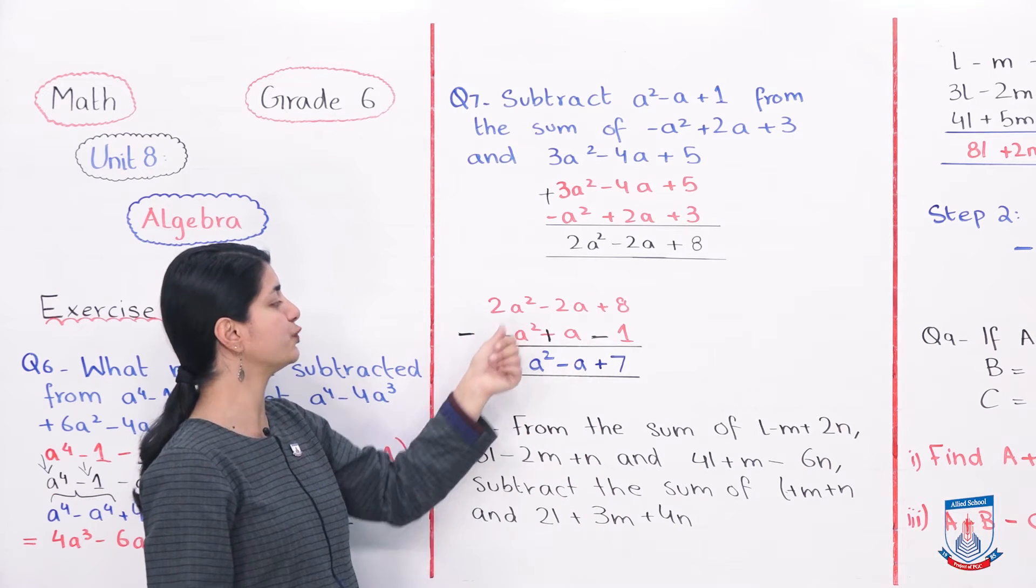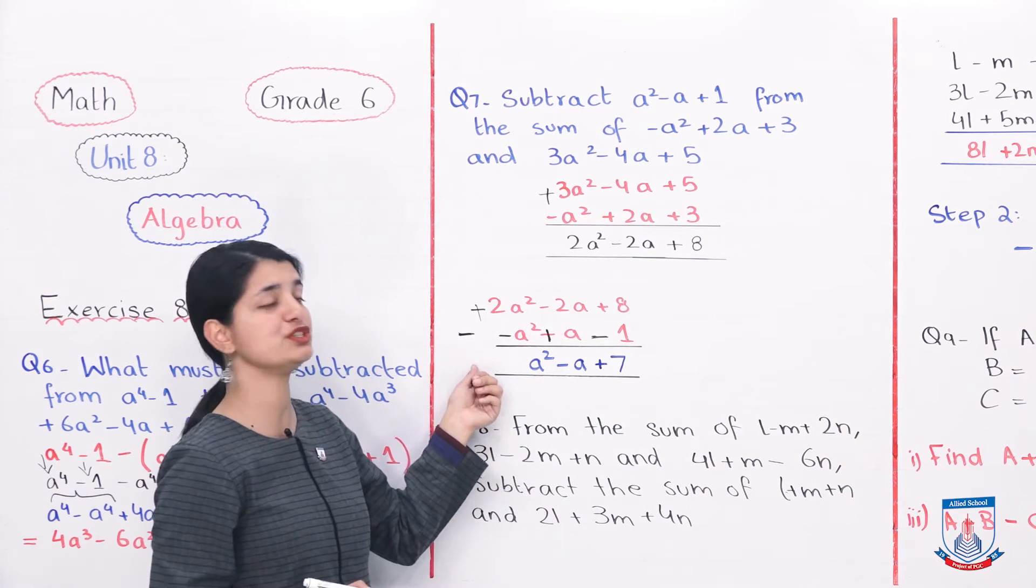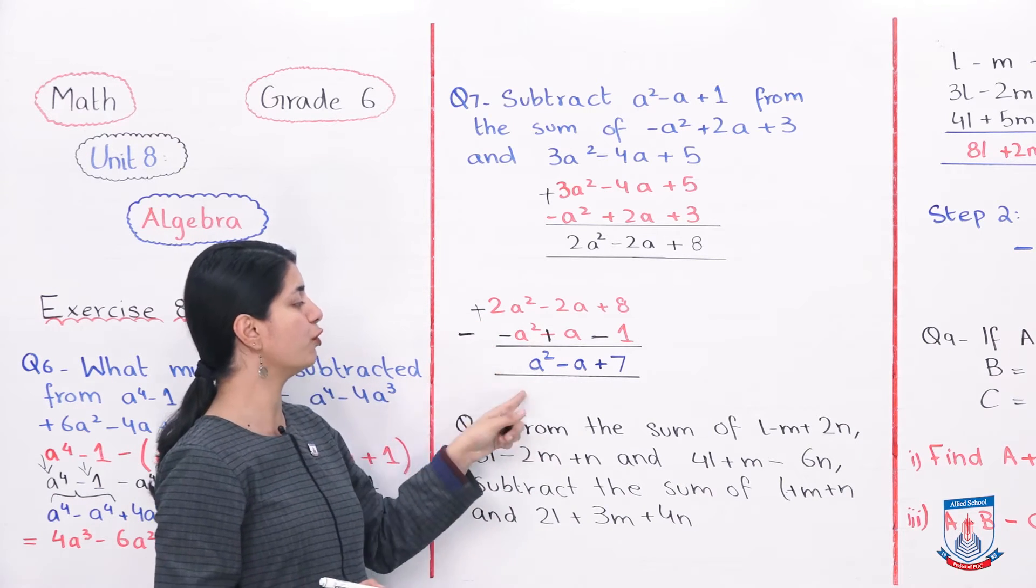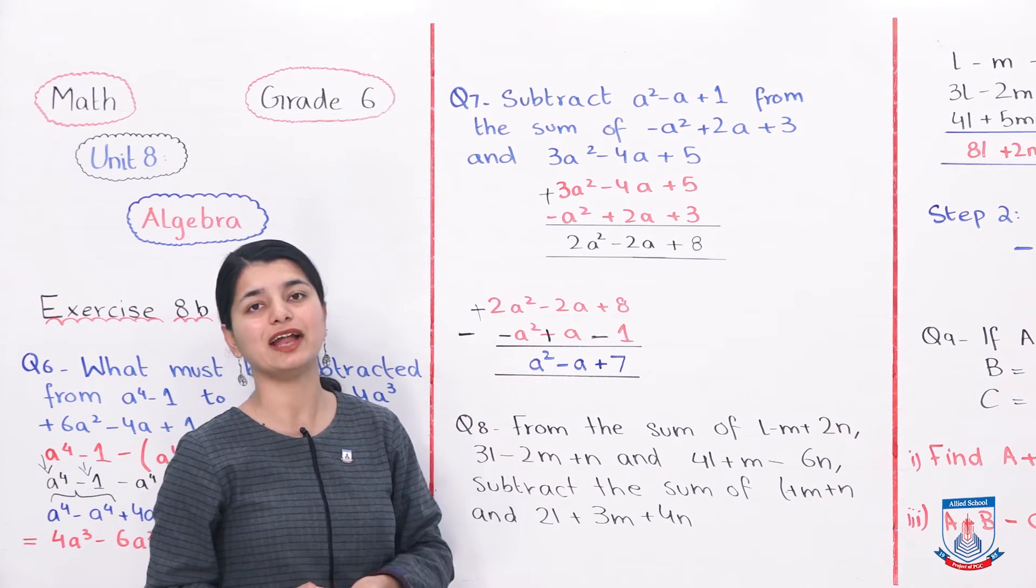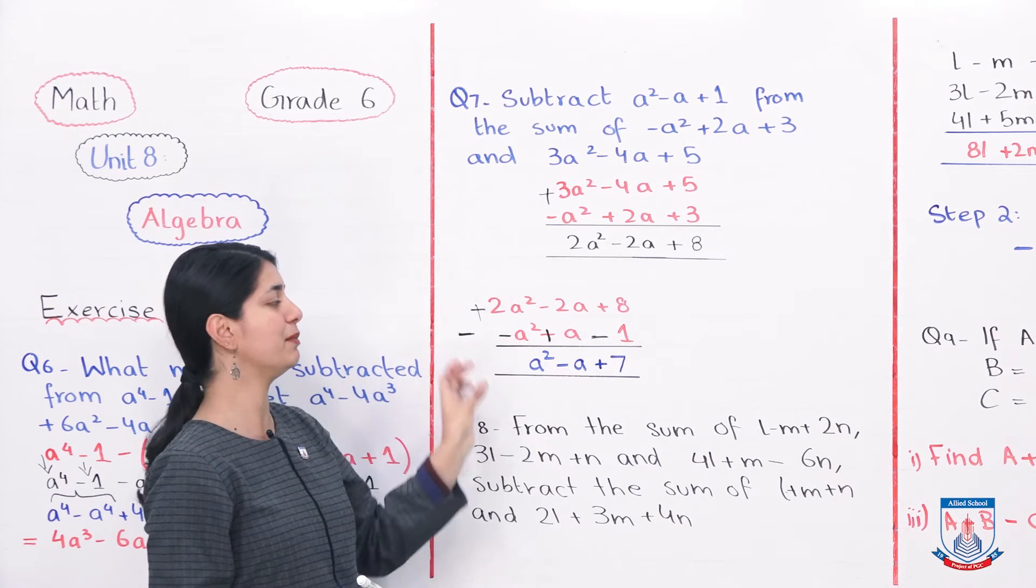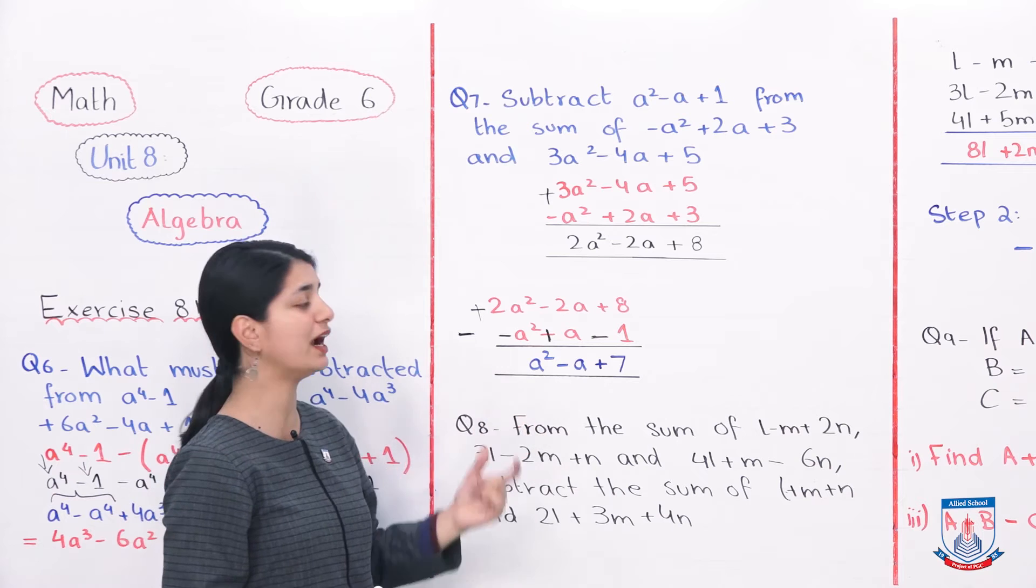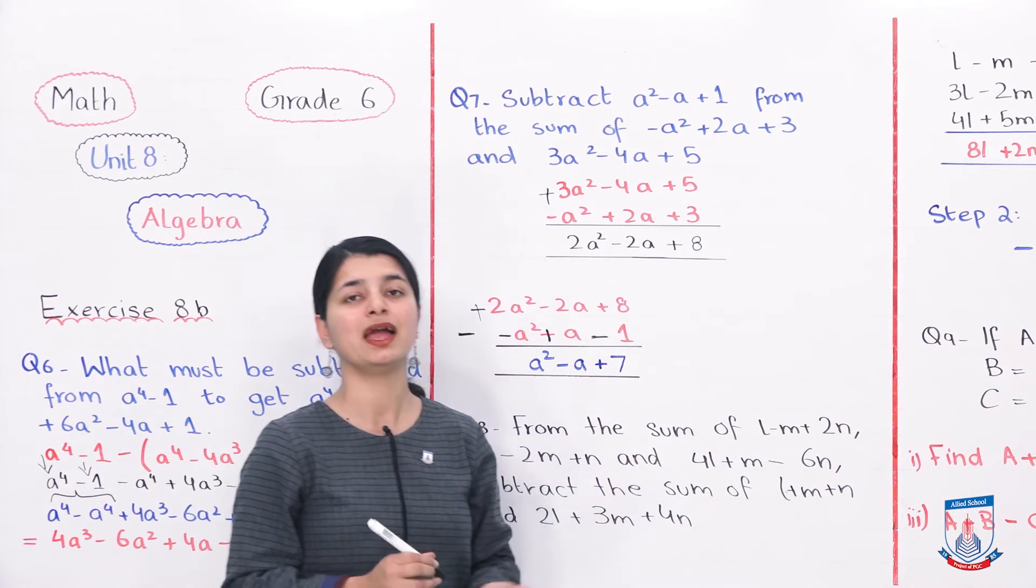Next, we have 2A^2 minus A^2. Again, plus and minus, which means you have to subtract. Subtract these two, 2 minus A, so that means we have A^2 left. And that right there is your answer. So first you found the sum of both, from that sum you subtracted the expression that was given, the answer is A^2 minus A plus 7. Now let's see question number 8.